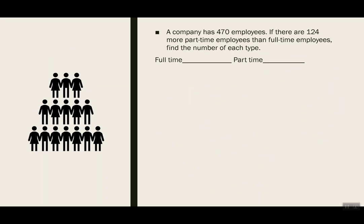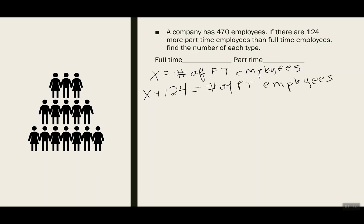Here's another example. A company has 470 employees. If there are 124 more part-time employees than full-time employees, find the number of each type. So hopefully by now you're starting to catch on to what I'm going to do, and you should be able to figure out what x should stand for. Should it be the full-time employees or the part-time employees? The clue is I always pick which one is smaller. Here it says there are 124 more part-time than full-time, so x will be the number of full-time employees. Then because there are 124 more, x plus 124 is going to be the number of part-time employees. We'll combine them: x plus x plus 124 equals 470.